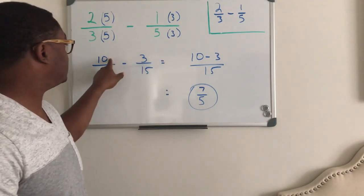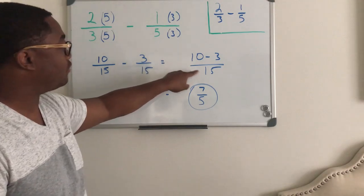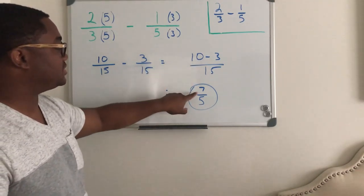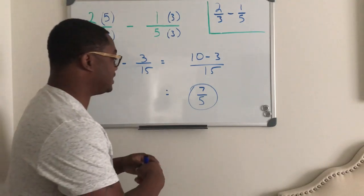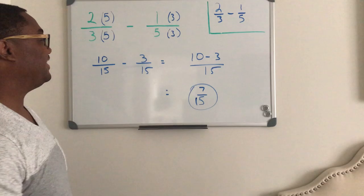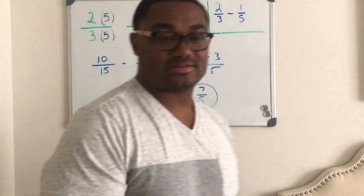So this is 15, and this is actually 15 as well. And so now I have two times five, which is 10, minus one times three, which is three. And because I have a common denominator, I can put 10 minus three over this 15 that I have, right?